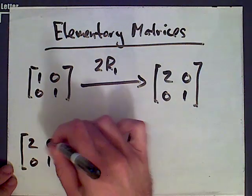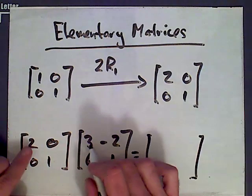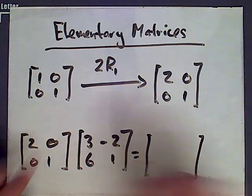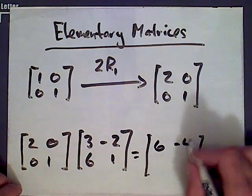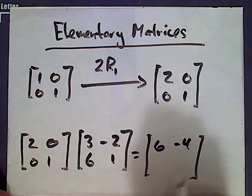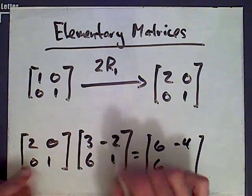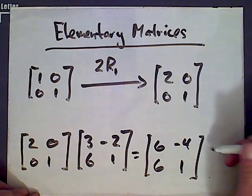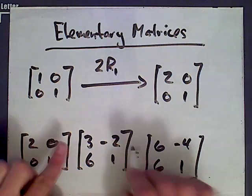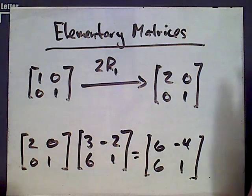Let's do the matrix multiplication. What we get, 2 times 3 is 6, plus 0 is 6. 2 times negative 2 is negative 4, plus 0 is negative 4. 0 plus 6 is 6, 0 plus 1 is 1. And as you can see, this matrix on the right was obtained from this matrix here by multiplying the top row by 2.